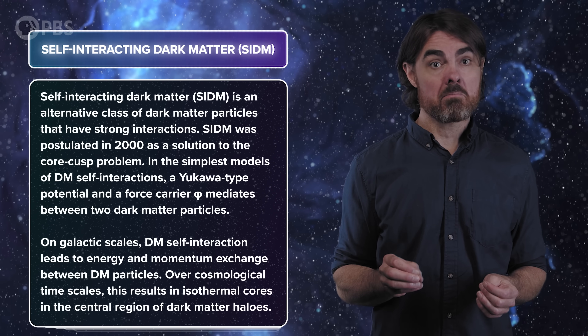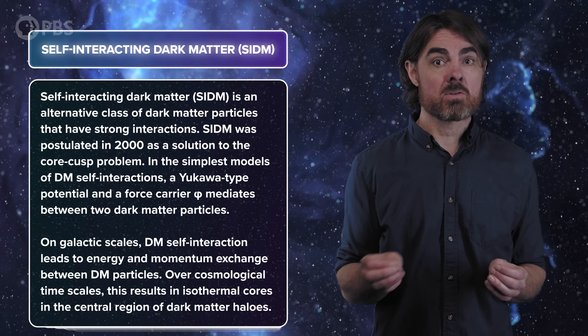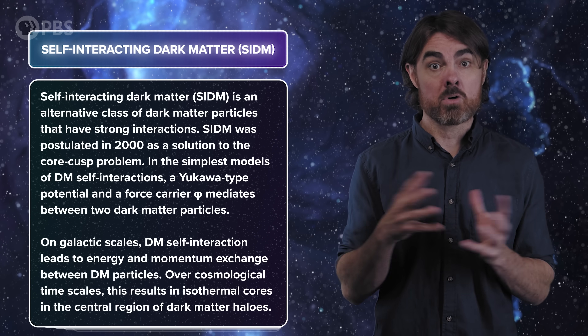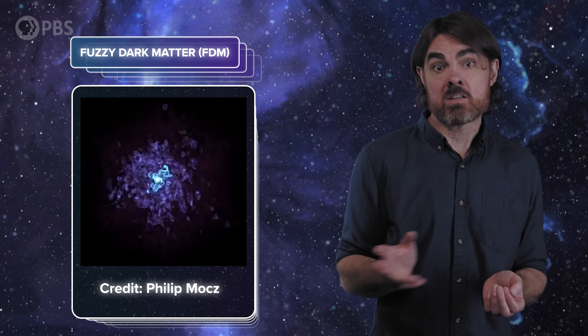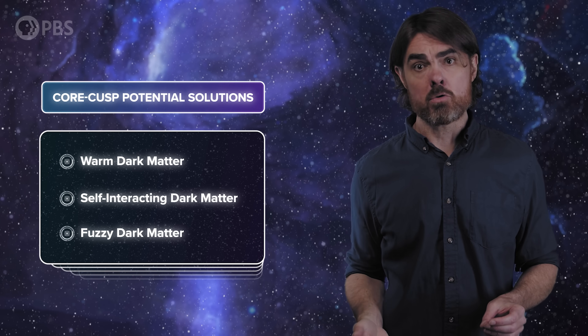Self-interacting dark matter proposes that dark matter particles actually do interact with themselves a bit more than standard CDM would assume. That means they can repel and scatter off each other, which stops them from becoming packed too tightly above a certain density. There's also fuzzy dark matter, which we talked about in our recent episode. In this model, dark matter is a superfluid of ultralight axions with a de Broglie wavelength thousands of light years long. It can't form substructures smaller than this wavelength, so it may neatly eliminate tiny satellites and may eliminate very concentrated galactic cores, perhaps solving both the missing satellites and cusp-core problems. So we have a few reasonable solutions to our dark matter woes, but which is right?